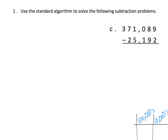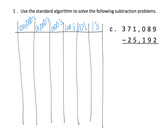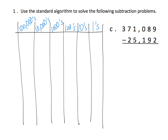It says use the standard algorithm to solve the following subtraction problems, and this is the one I'm going to use. But before I show you the standard algorithm, I want to make sure we understand the place value method, because it's this understanding that's going to lead students to understand the standard algorithm better. So the first thing I'm going to do is model 371,089. I'm going to go fairly quickly.